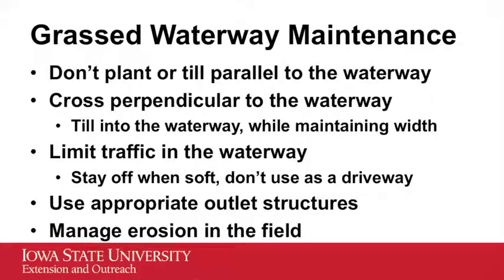Traffic patterns are also important around those waterways. We don't want to plant or till parallel to the waterway because that can encourage water to move outside the waterway parallel to it. When you're crossing the waterway, you want to cross perpendicular or on the contour so that you're encouraging water to move from the field into the grassed waterway. Limit traffic along those waterways, particularly when they're wet and soft — just stay off the waterway so you're not tearing it up. And don't use the waterway or the area right next to it as a driveway to get from one part of the field to another.